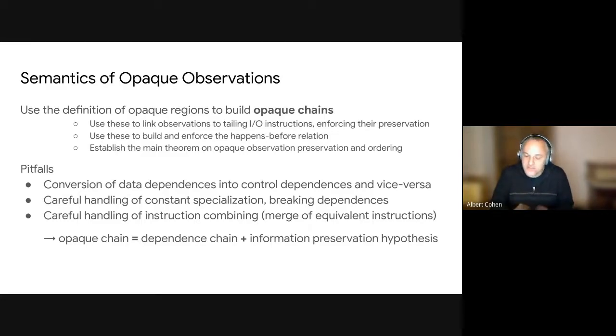And also for enforcing the preservation of the observations themselves, because we're going to use these opaque chains to link individual observations with I/O instructions, which cannot be eliminated. So interesting is that those opaque chains are very much chains of data and control dependencies, but there is a little bit of subtlety due to transformations like conversions of data dependencies into control dependencies and vice versa. Constant specialization, which can break dependencies, by just enumerating all possible values of a variable and also instruction combining, which can merge multiple paths in the control flow and eliminating duplicative instructions. So intuitively you can think of some minimal information that has to remain on some opaque values so that the compiler cannot just get away with the opaque value completely and predict statically what's coming.